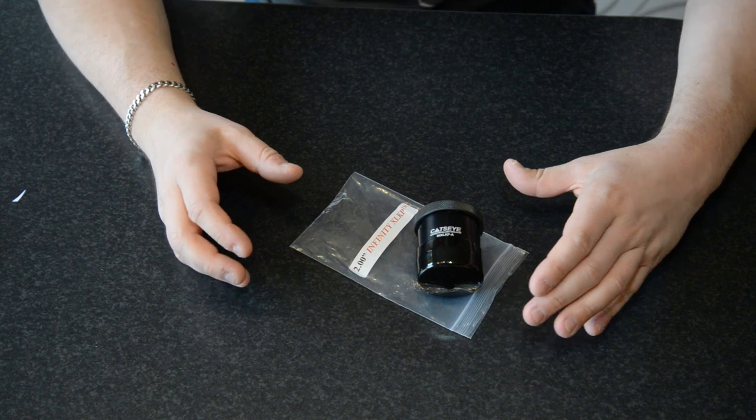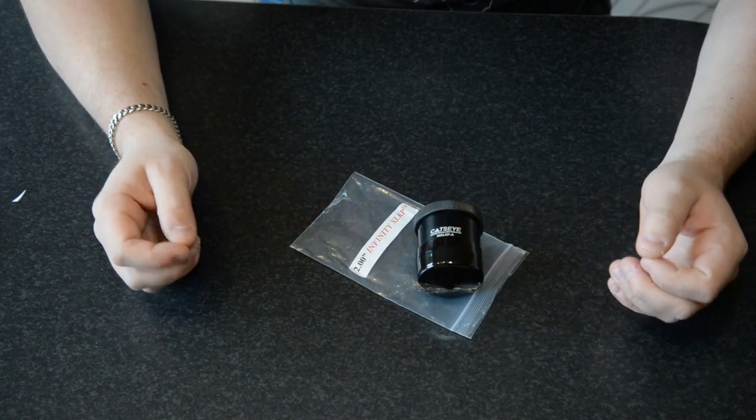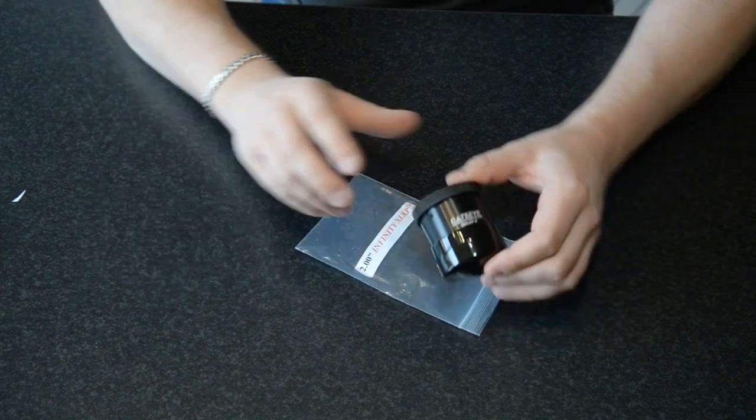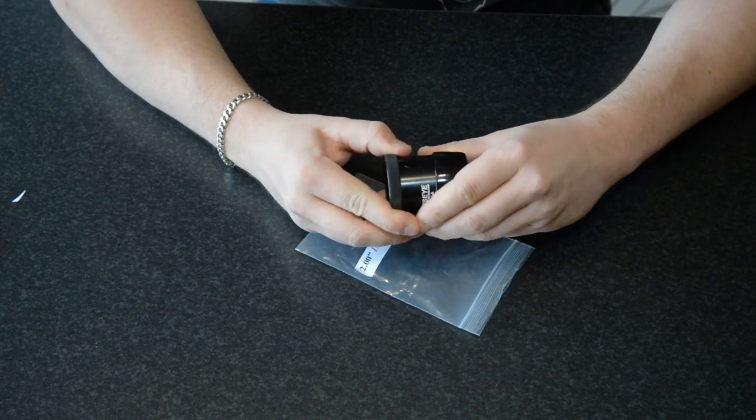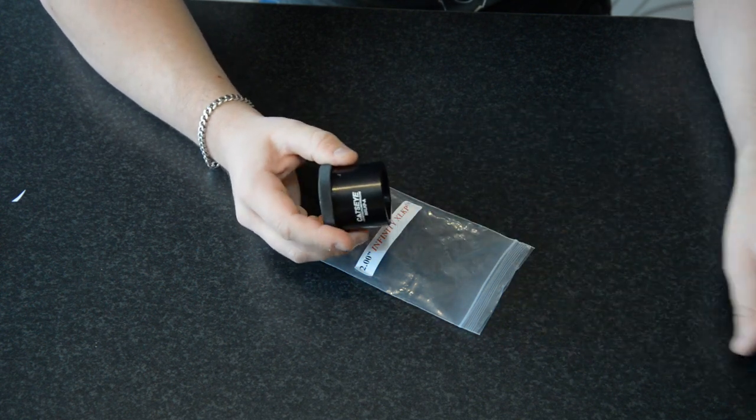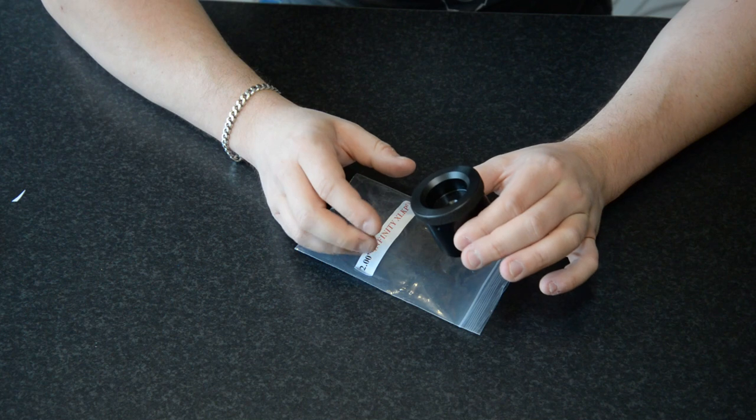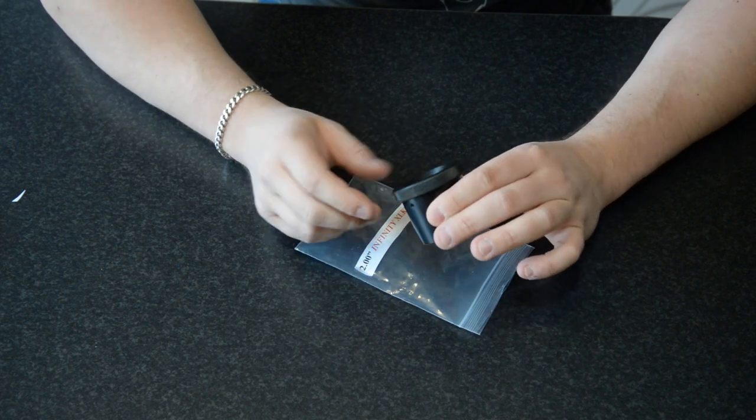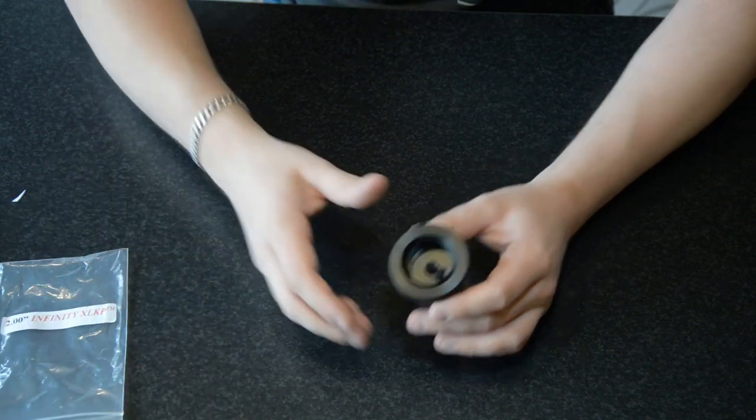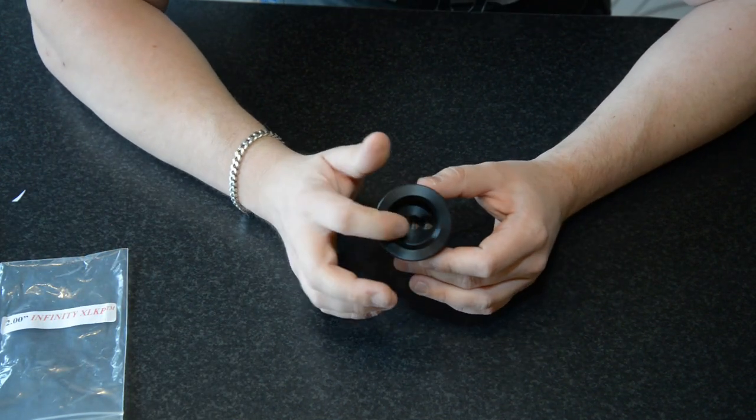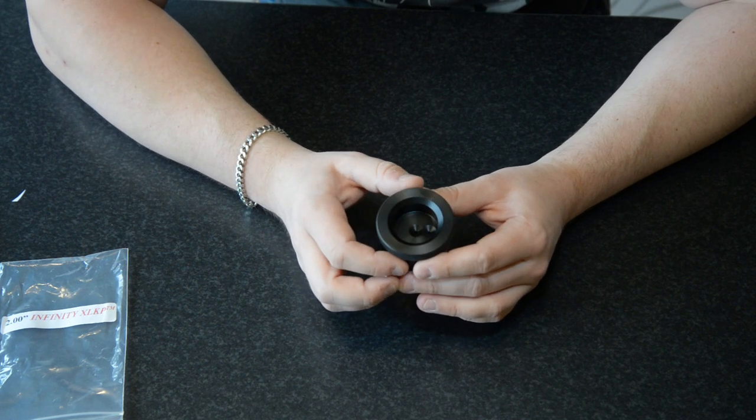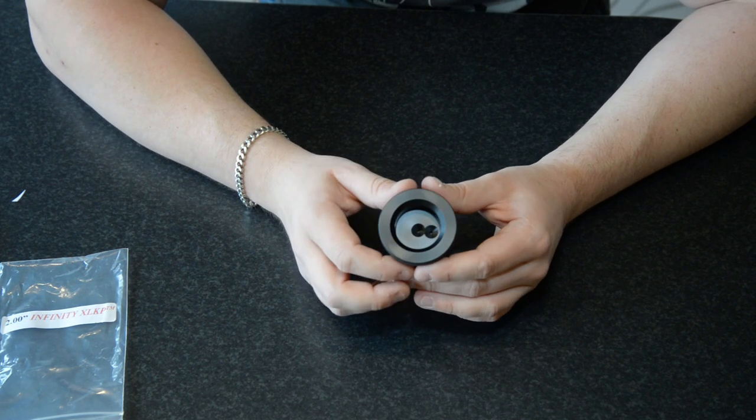This is the Cat's Eye Infinity XL KP collimation tool. This is regarded as the best eyepiece tool for collimation. It contains two pupil holes: one that is located in the center and one which is called the offset pupil.